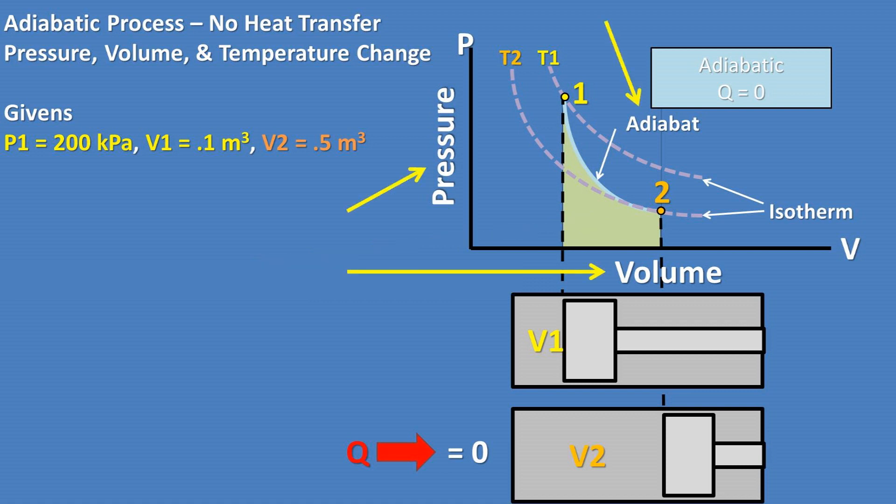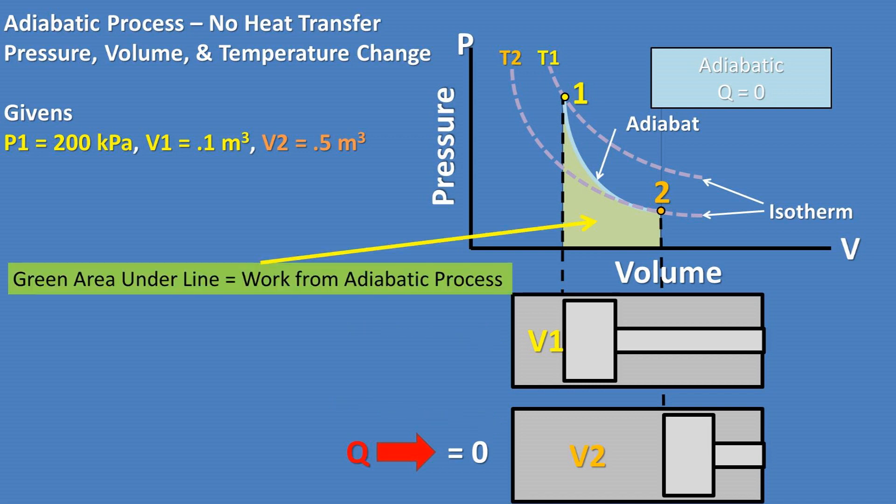So we have a pressure and volume graph with an adiabat on it. The adiabatic process is where there is no heat transfer, and pressure, volume, and temperature all change. Below this graph, we have two pistons that represent the change in volume of this process. We want to find the work done by the piston, which will be represented by the area under the adiabatic curve.